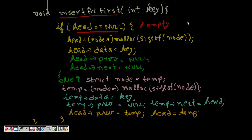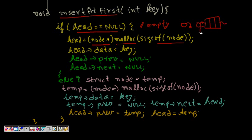For the empty list case, we make head point to a memory location returned by malloc, specifying the size of struct node. The return type is void pointer, so we typecast it to node pointer. Then we set head->data equal to key, head->previous equal to null, and head->next equal to null. This gives us a doubly linked list with one element, where both previous and next are null.